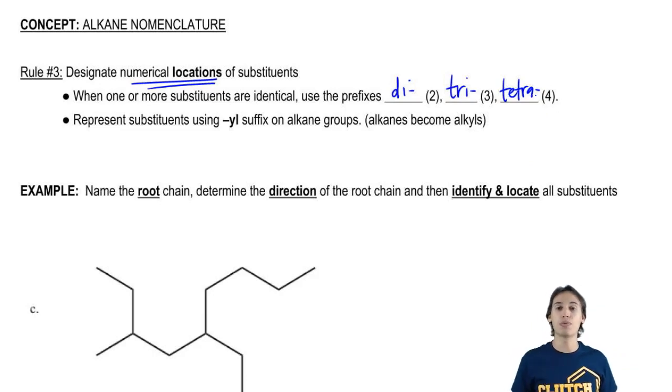And when we do represent these chains, these branches, they aren't true alkanes. And the reason is because they're always going to be missing an H because of the fact that they are on a branch.